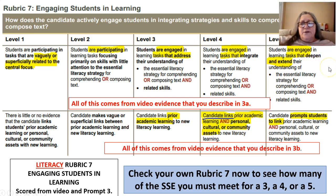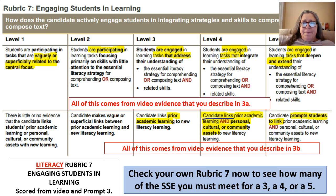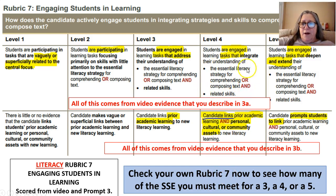How do you know the difference between 'address,' 'integrate,' and 'deepen'? You have to look at your URL — your understanding rubric level progression. Look at rubric 7, look at the descriptor for a 3, look at how a scoring decision is made between a 3 and 4, and between 4 and 5. If you are not teaching in these content areas — if you're secondary — look at your rubric 7. Your difference is going to be in the SSE portion.